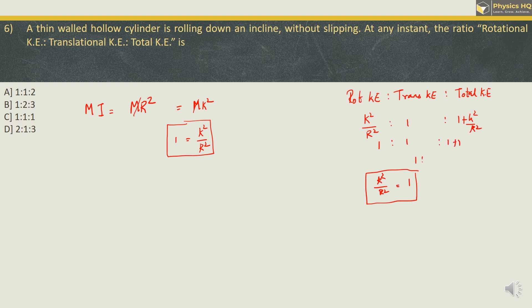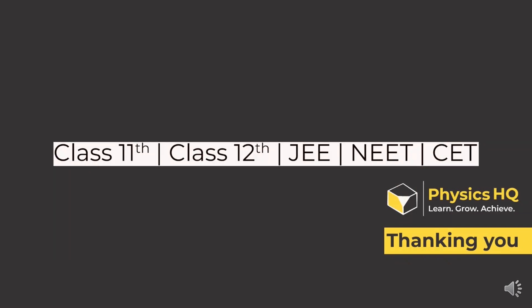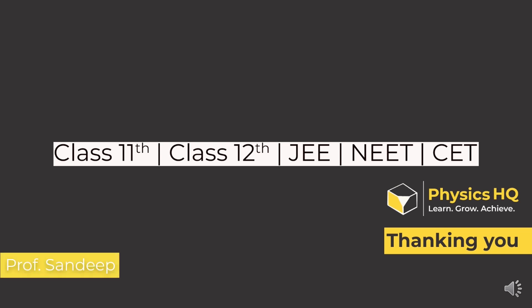The final ratio is 1 : 1 : 2, so the correct option is option A. Thank you for your time. If you are finding this lecture series useful, show your appreciation by clicking the like button, and don't forget to share it with your friends and classmates. Based on your feedback, we will be covering key concepts under our 5-minute lecture series of class 12 — please let us know the topic you want us to cover. See you all in the next class. This is Professor Sandeep from Physics HQ signing off.